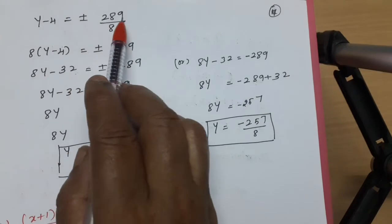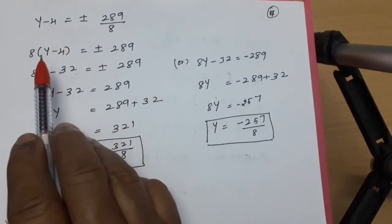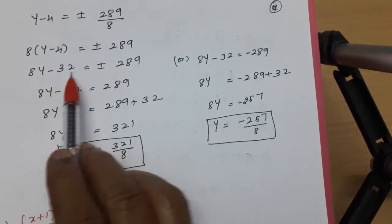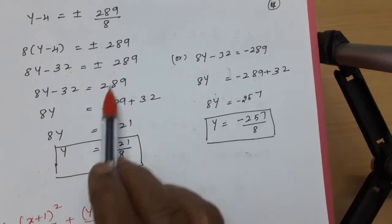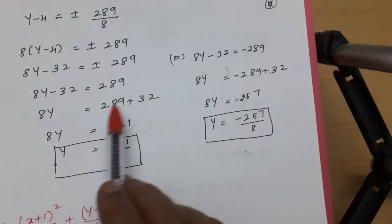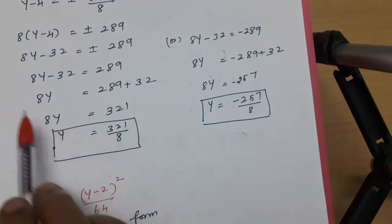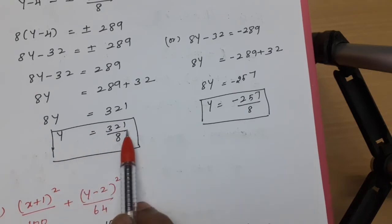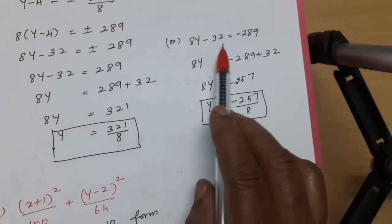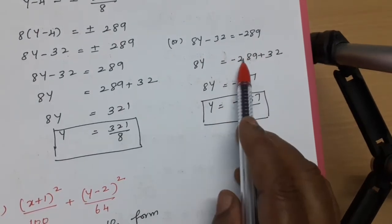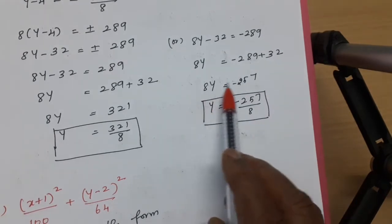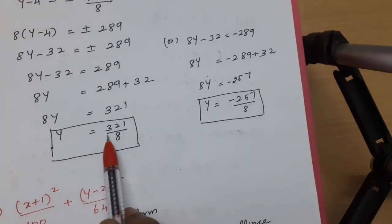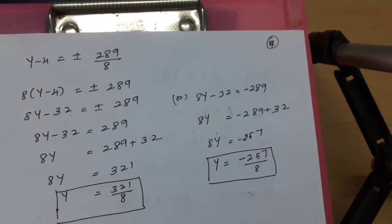Solving: 8(y − 4) equals plus or minus 289. So 8y minus 32 equals plus 289 gives 8y equals 321, y equals 321/8. And 8y minus 32 equals minus 289 gives 8y equals minus 257, y equals minus 257/8. These are the two directrices.